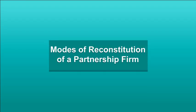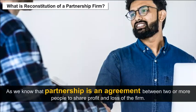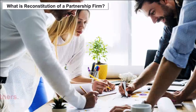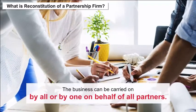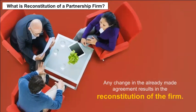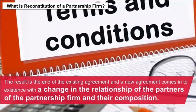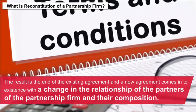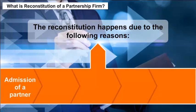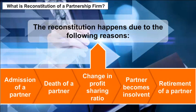Modes of reconstitution of a partnership firm: What is reconstitution of a partnership firm? As we know, partnership is an agreement between two or more people to share profit and loss of the firm. The business can be carried on by all or by one on behalf of all partners. Any change in the already made agreement results in the reconstitution of the firm, ending the existing agreement and bringing a new agreement into existence. The reconstitution happens due to reasons like admission of a partner, death of a partner, change in profit sharing ratio, a partner becoming insolvent, or retirement of a partner.